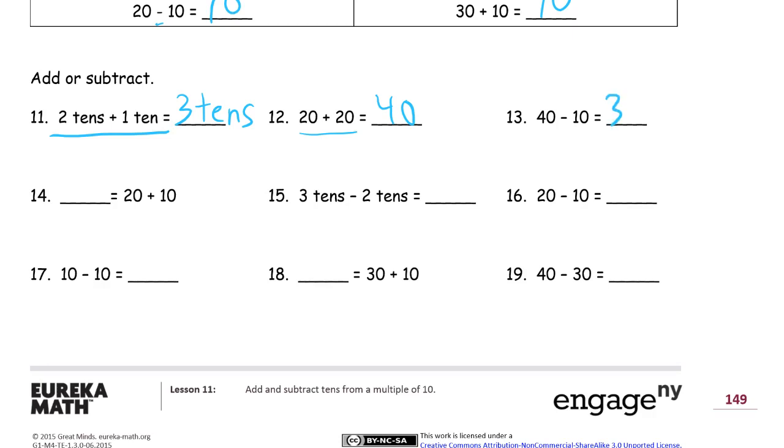40 minus 10, 30. And here we're looking at 20 plus 10. That's 30. 3 tens minus 2 tens. You might want to look at this. It might be easier to think of that way, in regular form, to see it that way. 3 minus 2 is 1. So there's going to be 1 ten left. 20 minus 10 is 10. 10 minus 10 is 0. And here we need 30 plus 10. That's 40. And this is 40 minus 30. There's going to be 10 left there.